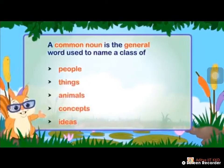A common noun is the general word used to name a class of people, things, animals, concepts, ideas. Best example: while the class is going on, the teacher tells the class, 'Be quiet children. Stop talking boys and girls.' Here we did not specify anyone. Commonly or generally it was said — 'Be quiet children' to a class of people.